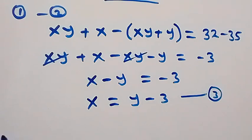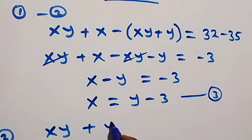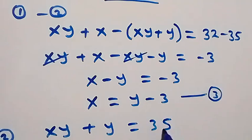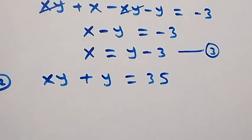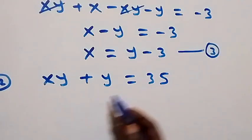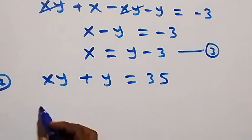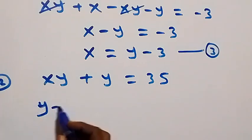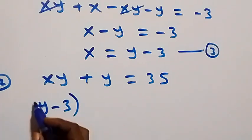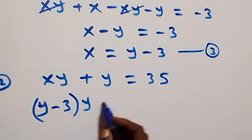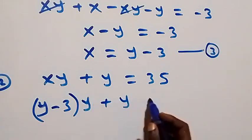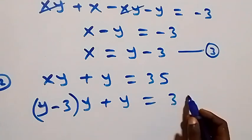From equation two, which is x times y plus y equals 35, we can substitute equation three here. So in equation two we have (y minus three) times y plus y equals 35.